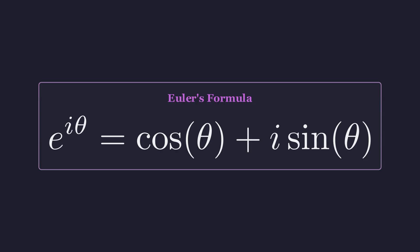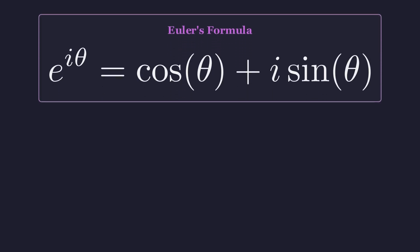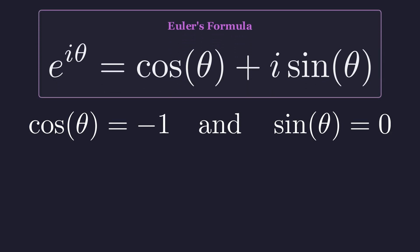Our goal is to find an angle, theta, that makes the right side of this equation equal to negative 1, which, in the complex plane, is negative 1 plus 0 i. This requires the real part, cosine of theta, to be negative 1, and the imaginary part, sine of theta, to be 0.